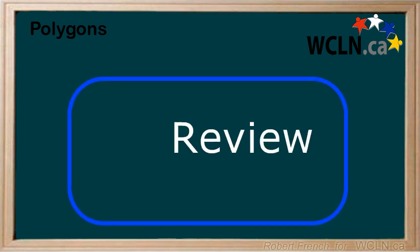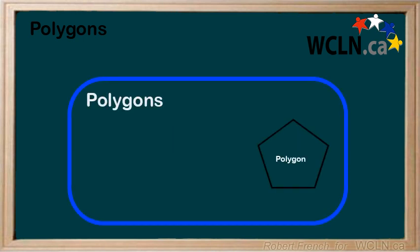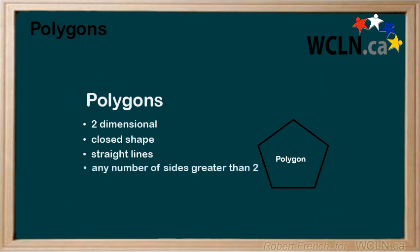In this lesson, you learned about polygons. That polygons are two-dimensional, a closed shape, and made of straight lines. You also learned that they can have any number of sides greater than two, and n is used to represent the number of sides.